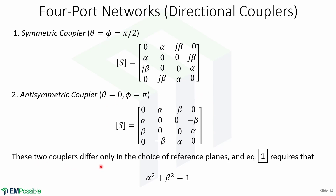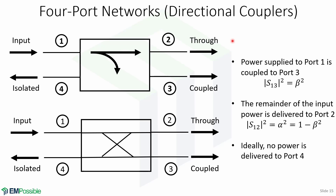These two couplers differ only in the choice of reference planes, and equation 1 requires that alpha squared plus beta squared equals 1. These are two commonly used symbols for directional couplers. The power supplied to port 1 is coupled to port 3, which is the coupled port, with coupling factor beta squared equals the magnitude of S13 squared. The remainder of the input power is delivered to port 2, which is the through port, with coefficient alpha squared equals 1 minus beta squared, equal to the magnitude of S12 squared. Ideally, no power is delivered to port 4, which is called the isolated port.